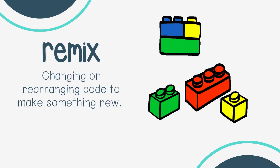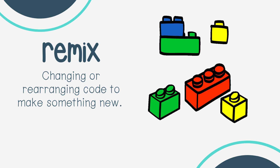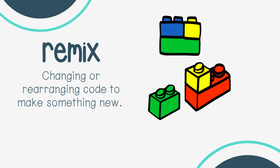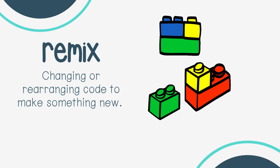Remix: changing or rearranging code to make something new. If you build a car out of Legos, you can take that car, add bigger wheels, change the color, add something to it — that's a remix. You're starting with the original design, but you add things or take things away to make it your own. In coding, you might start with a simple game and add new levels or characters — that's making it your own.